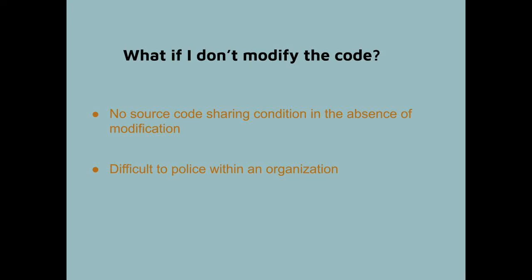Most open source code is used without modification, and AGPL has no conditions if you neither modify nor distribute the code. So you might wonder why your company will not let you use AGPL code even if you don't intend to modify it. The answer has to do with cost-benefit analysis. Compliance processes are costly — they are one of the main costs of using open source software. If the company approves AGPL code, it suddenly needs to add a new layer of compliance process, and many companies just don't have the process in place to trap this error.